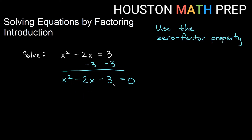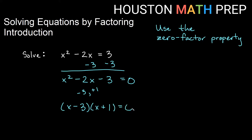This is now a trinomial with no greatest common factor other than 1. Since a equals 1, I have a shortcut — I need two numbers that multiply to give me negative 3 and add to give me negative 2. Those numbers are negative 3 and positive 1: they multiply to give negative 3 and add to give negative 2. So my a equals 1 shortcut tells me the factors are (x minus 3) and (x plus 1). So I have (x minus 3) times (x plus 1) equals zero, and now I set each factor equal to zero.